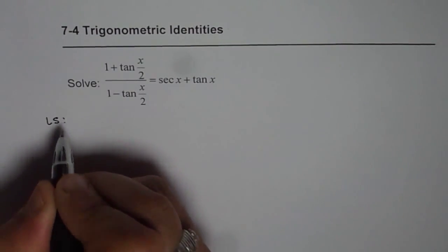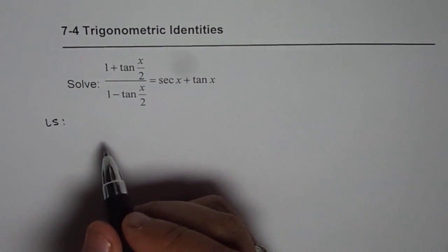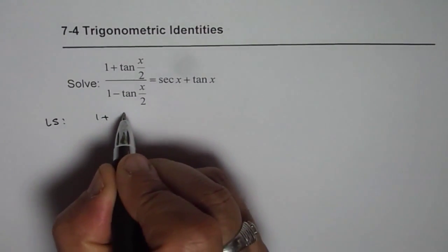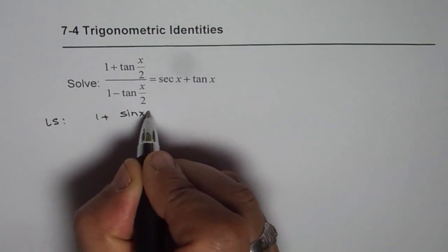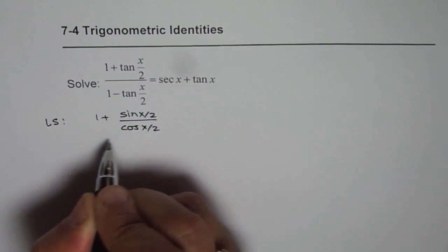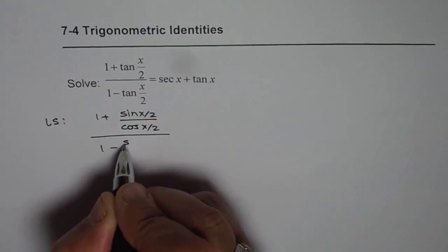We'll write tan(x/2) as a ratio of sine over cos. So we can write the left side as (1 + sin(x/2)/cos(x/2))/(1 - sin(x/2)/cos(x/2)).